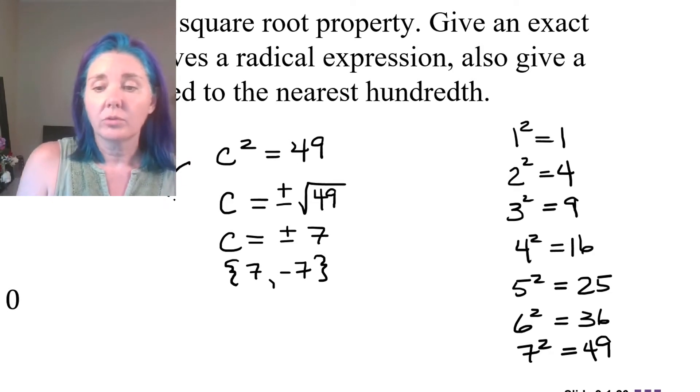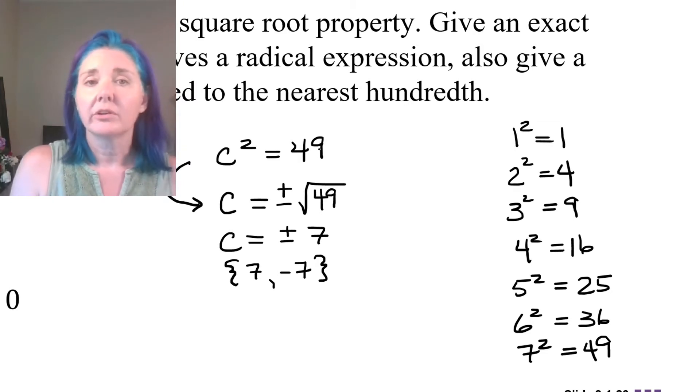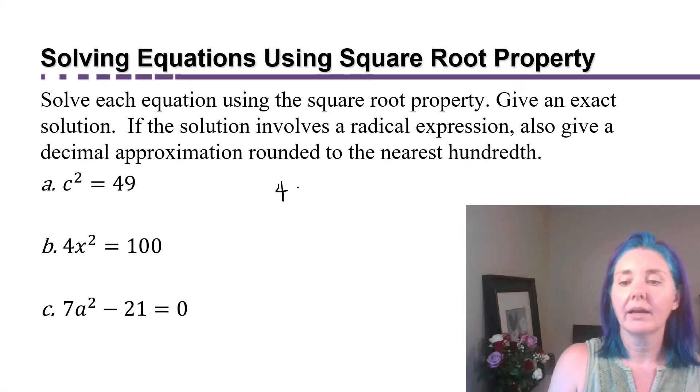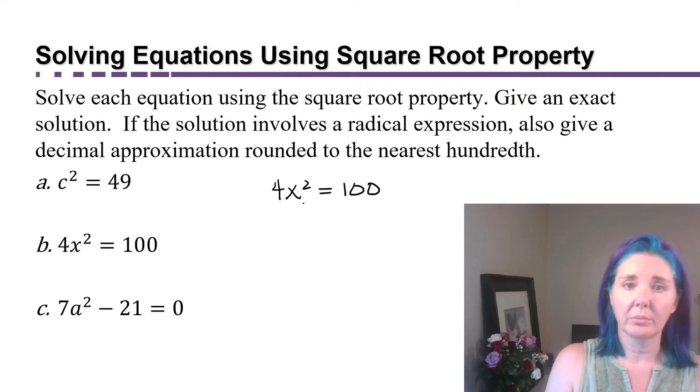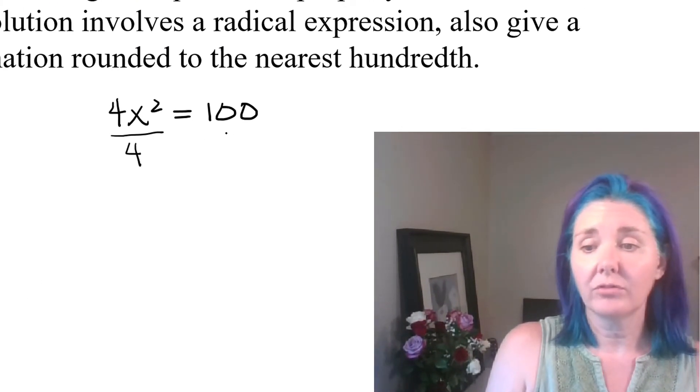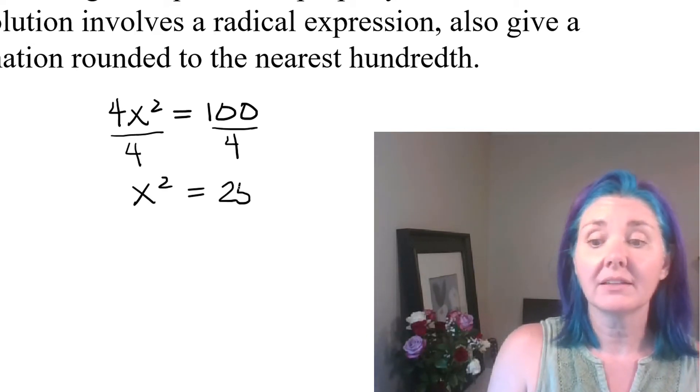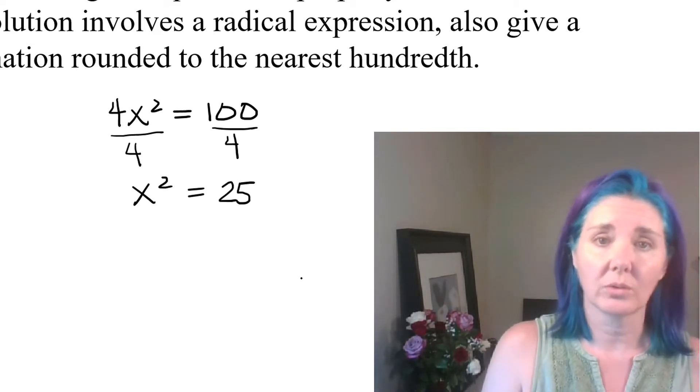Now we were able to apply the square root property at this step because we had a variable squared equal to a number. Sometimes equations aren't already set up in that way, and we have to rearrange a little bit first. So let's look at 4x squared equals 100, which is part b. The x squared is not by itself yet, so you can't use the square root property. You need to divide both sides by 4 to get that x squared by itself first. This gives us x squared equals 25.